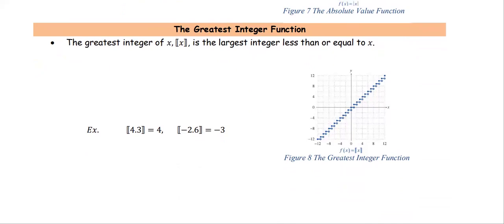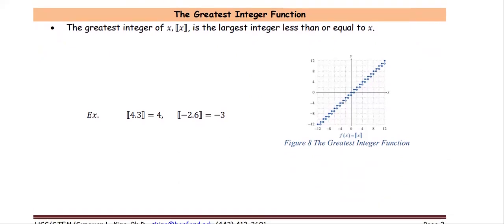The next type of function is the greatest integer function. By definition, the greatest integer function of x is the largest integer less than or equal to x.